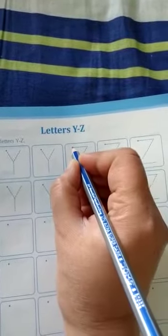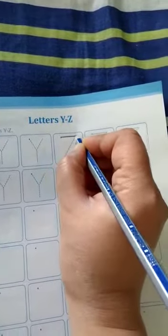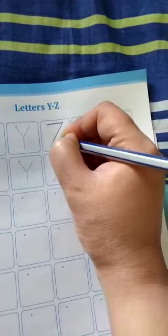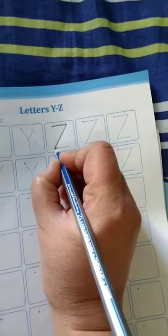And this is for Z. One sleeping line, then one slanting line like this, and then one sleeping line towards the right hand side.